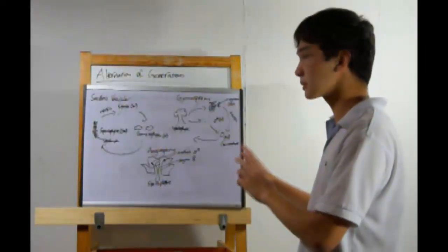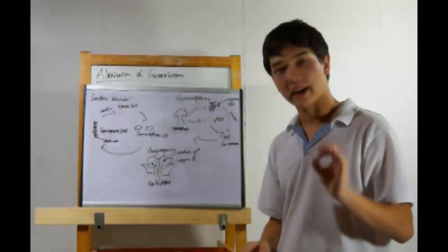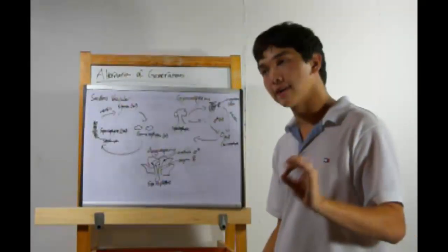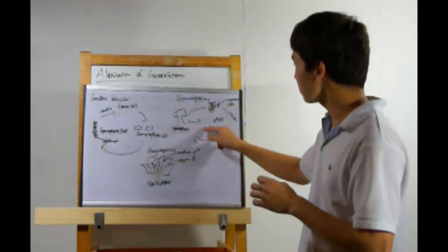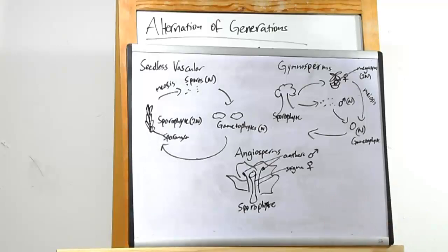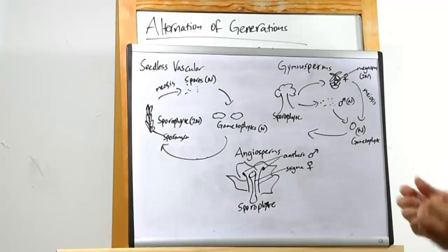Remember, gymnosperms will use pine cones, or cones of some sort, to reproduce. But something interesting happens here. The gametophytes are very different. The male gametophyte for gymnosperms is recognizably a seed-like thing that can actually float on the air.